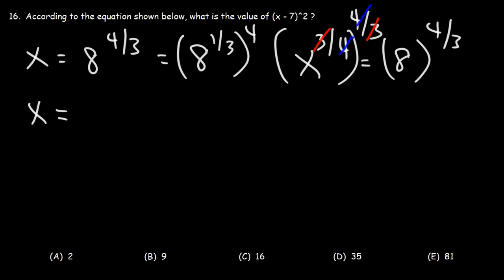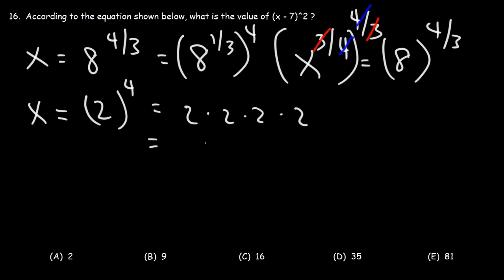8 raised to the 1 third is basically the cube root of 8. One number multiplied by itself 3 times is 8 — we know 2 times 2 times 2 is 8, so the cube root of 8 is 2. So now we have 2 to the 4th power, meaning we're multiplying four 2s. 2 times 2 is 4, and 4 times 4 is 16. So 8 raised to the 4 over 3 is 16.